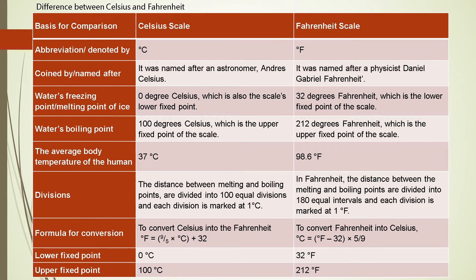In the Celsius scale, between 0°C and 100°C there are 100 equal divisions, and each division is marked as 1°C. The average body temperature of a normal human being is 37°C in the Celsius scale and 98.6°F in the Fahrenheit scale.